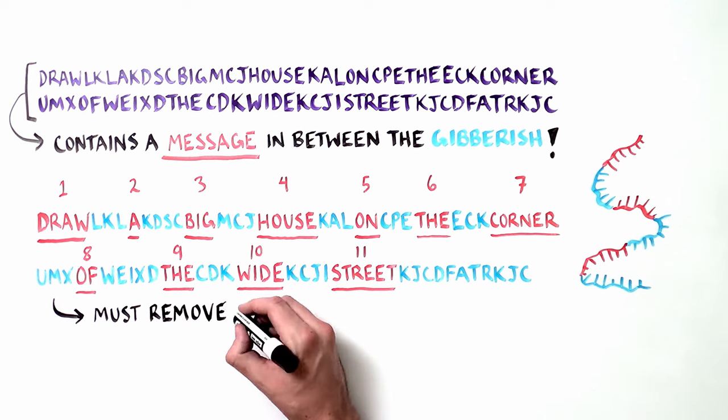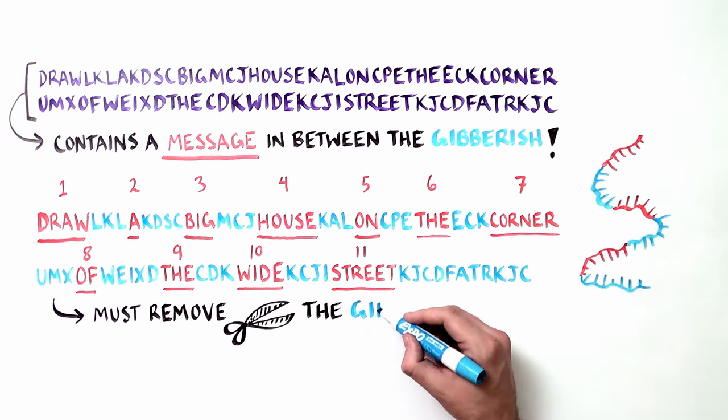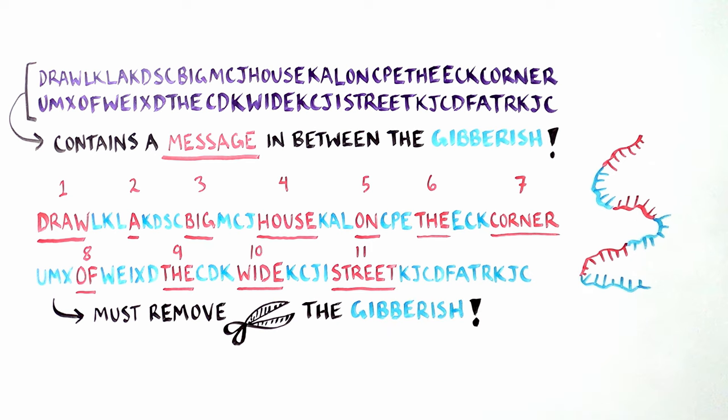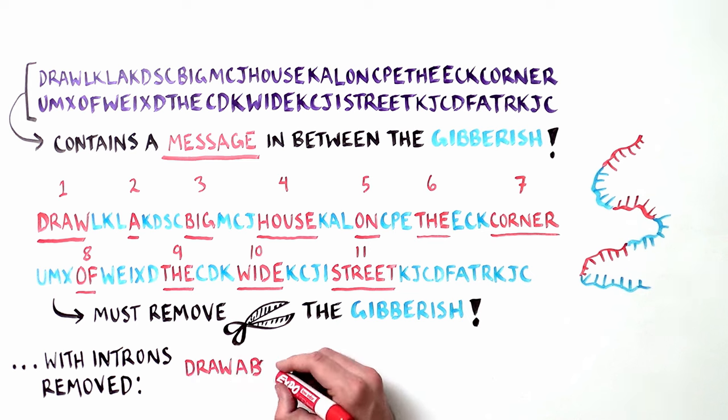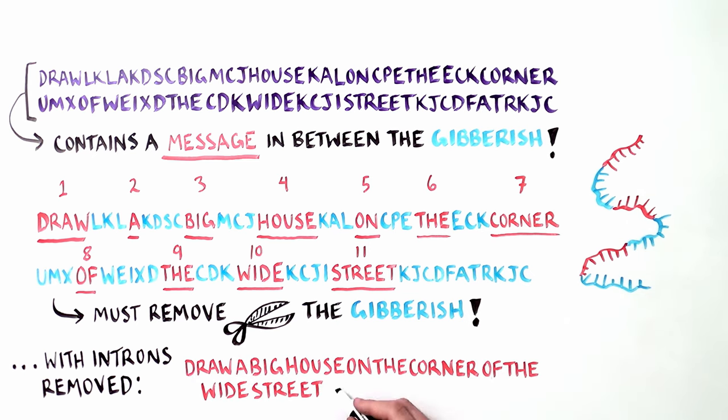As the introns are cut out, the exons are pasted together to form what biologists call a mature messenger RNA. The message now contains only those letters necessary to make a protein, or in our analogy, a meaningful sentence with 11 words or exons: 'Draw a big house on the corner of the wide street.'